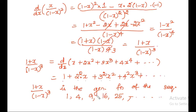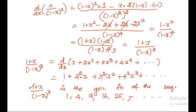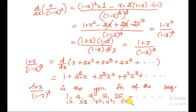So this is the generating function. You can write (1 plus x) divided by (1 minus x) whole cubed as the generating function. You can also write the sequence as 1 squared, 2 squared, 3 squared, 4 squared, 5 squared — like this. So this is one of the generating functions.